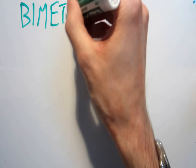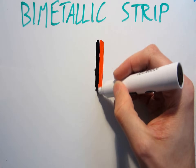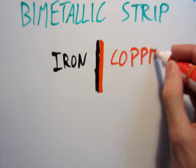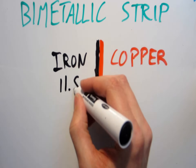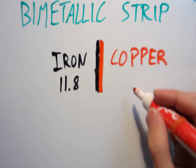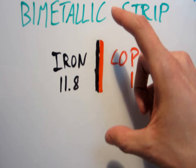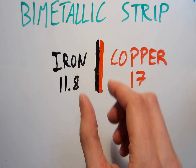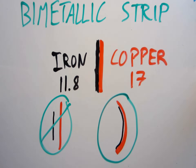Another cool application is what's called a bimetallic strip. This is simply two different strips of metal, usually iron and copper, joined together. Iron has a coefficient of 11.8, while copper comes in at 17. When the strip is heated, the copper will want to expand more than the iron. Since they're joined together though, the copper isn't able to get longer freely, and the overall effect is that the strip bends.